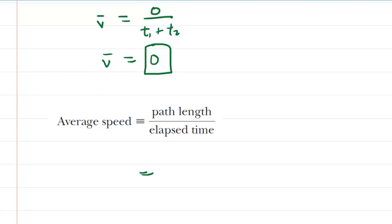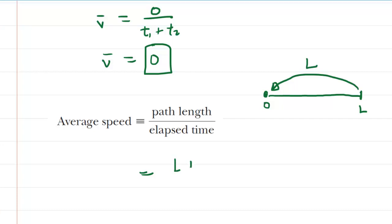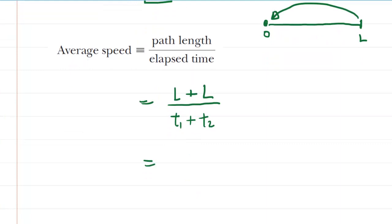For the path length, we need to be careful. She starts at 0, travels to the one end of the pool covering a distance of L, then turns around and returns to her starting point, which is also a distance of L. So the total path length is L plus L. Dividing by the elapsed time T1 plus T2, the numerator simplifies to 2L, giving us 2L divided by T1 plus T2 as the correct answer to part D.